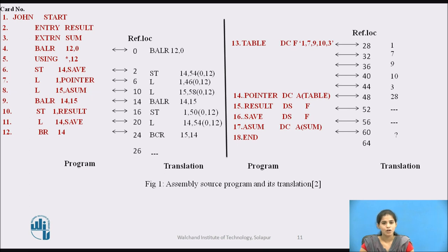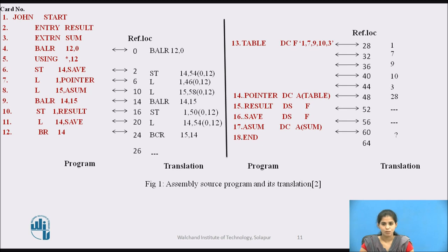Similarly, card number 17 is another DC operation which instructs the assembler to create a constant with the value of the address of subroutine sum, placed in the location labeled sum. Since the assembler has no idea where procedure sum will be loaded, it cannot generate this constant. The assembler must provide information to the loader to fill in the final absolute address of sum when the programs are loaded. We have named the program John because John is a symbol that may be referenced externally or called by other programs.